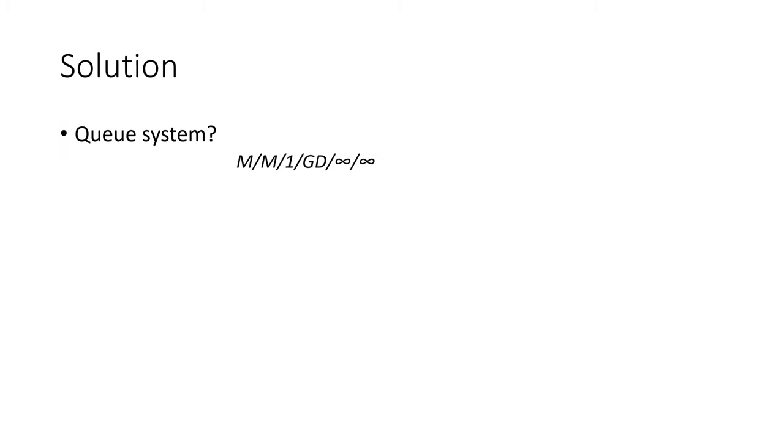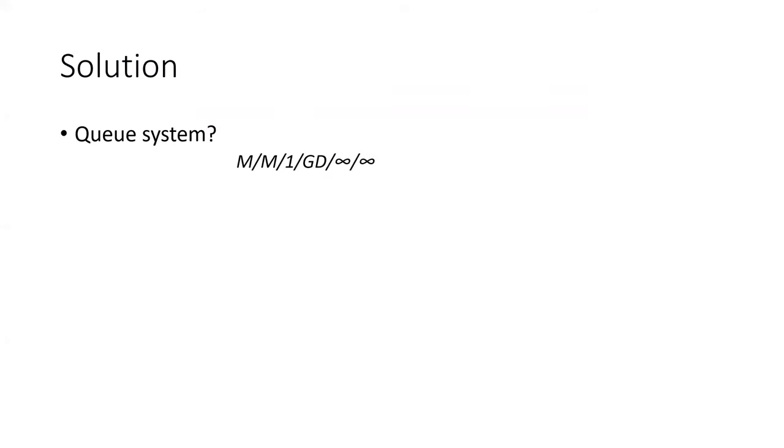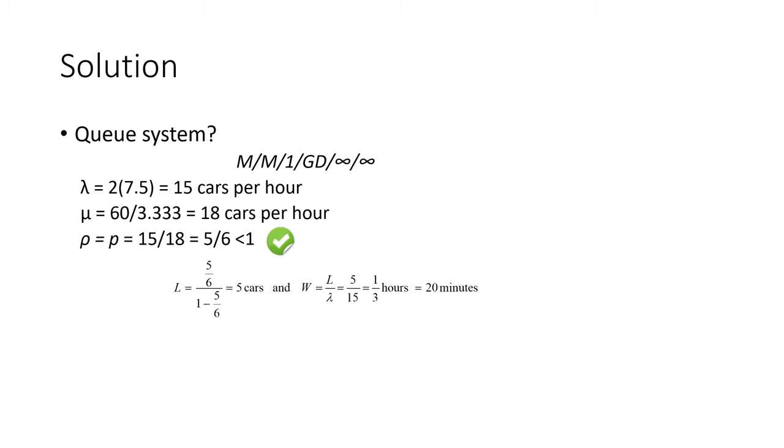We want to see how this panic buying affects L and W. Queuing system is still M/M/1. Lambda has increased because now it takes half the time for them to realize they need to go get gas. They go twice as much as before to the gas station. So I multiply lambda by two, you get 15. Mu has increased to 18 because it's faster. Rho is still less than one. Now my L is rho over 1 minus rho, which is five cars. W becomes 20 minutes. So you see how changing these rates affects performance of the system.